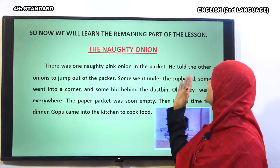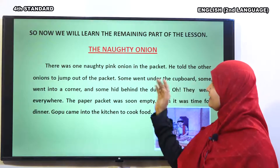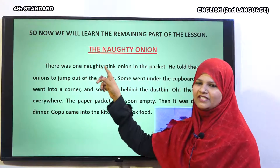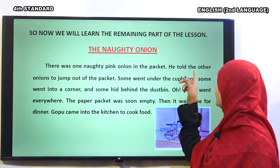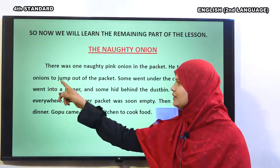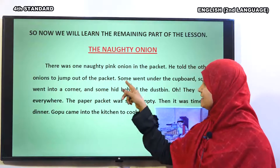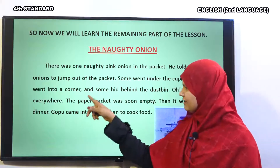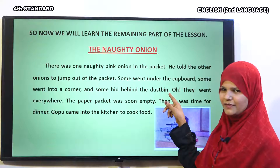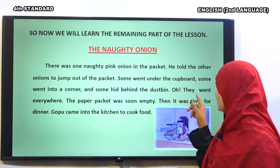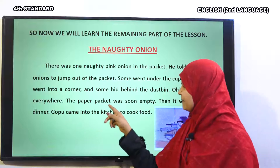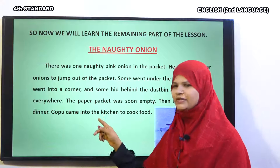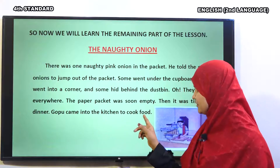We will learn the remaining part of the lesson. The Naughty Onion. There was one naughty onion in the packet. He told the other onions to jump out of the packet. Some went under the cupboard. Some went into a corner. And some hid behind the dustbin. They went everywhere. The paper packet was soon empty. Then, it was time for dinner. Gopu came into the kitchen to cook food.